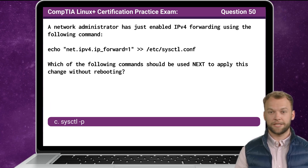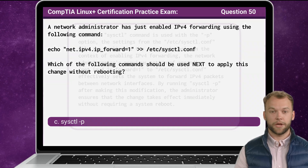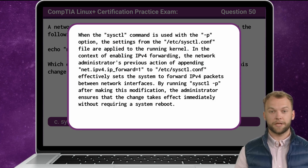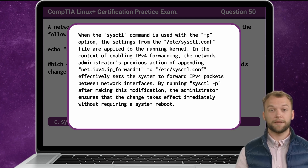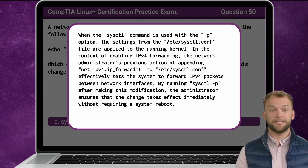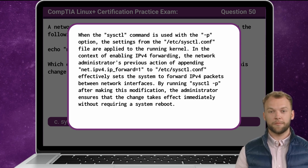The answer is C: sysctl -p. When the sysctl command is used with the -p option, the settings from /etc/sysctl.conf are applied to the running kernel. In the context of enabling IPv4 forwarding, the network administrator's previous action of appending net.ipv4.ip_forward=1 to /etc/sysctl.conf sets the system to forward IPv4 packets between network interfaces. By running sysctl -p after making this modification, the administrator ensures that the change takes effect immediately without requiring a system reboot.